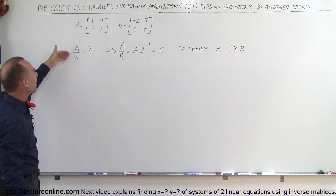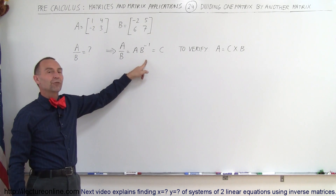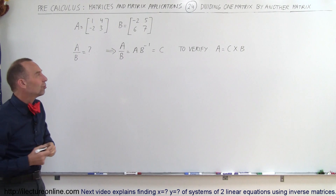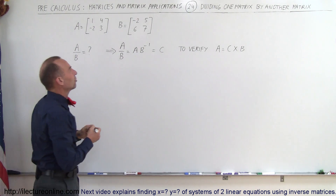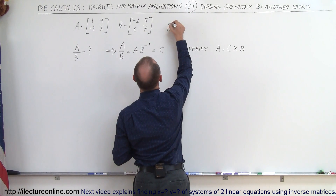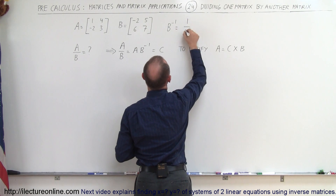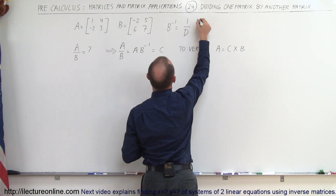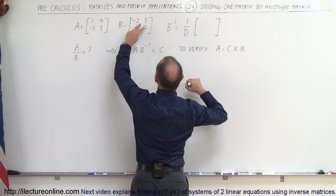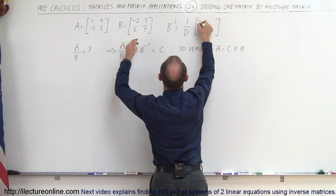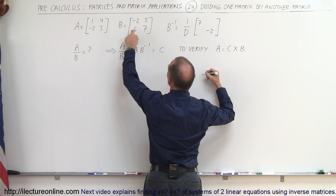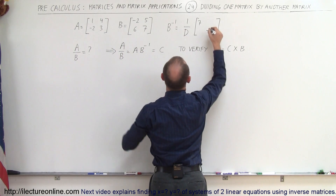To divide A by B, we need to find the inverse of B first. Since it's a 2×2 matrix, we'll use the easy method. The inverse of matrix B equals 1 divided by the determinant times the matrix, but with the 2 and 7 interchanged — so the 7 goes up here and the 2 goes down here.